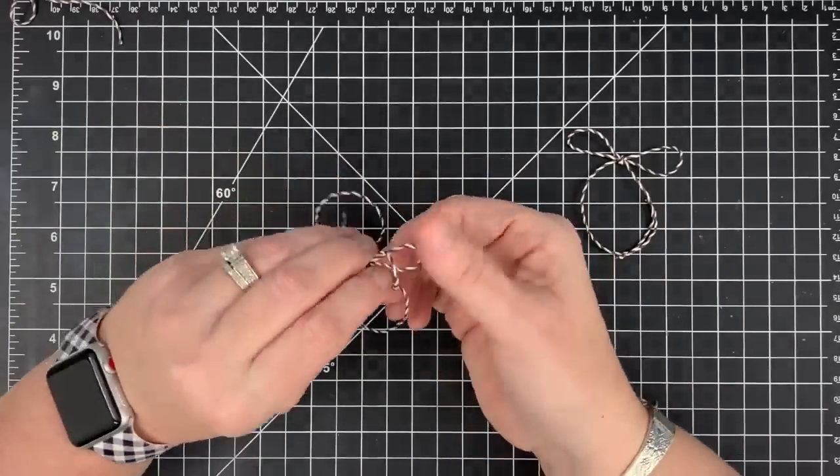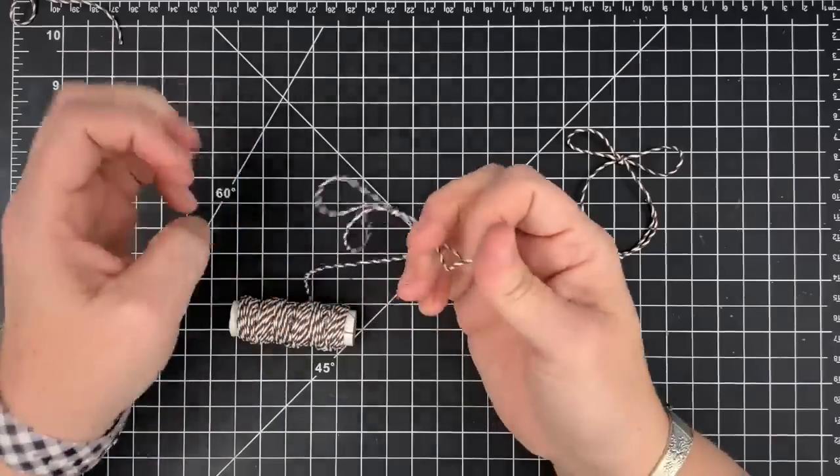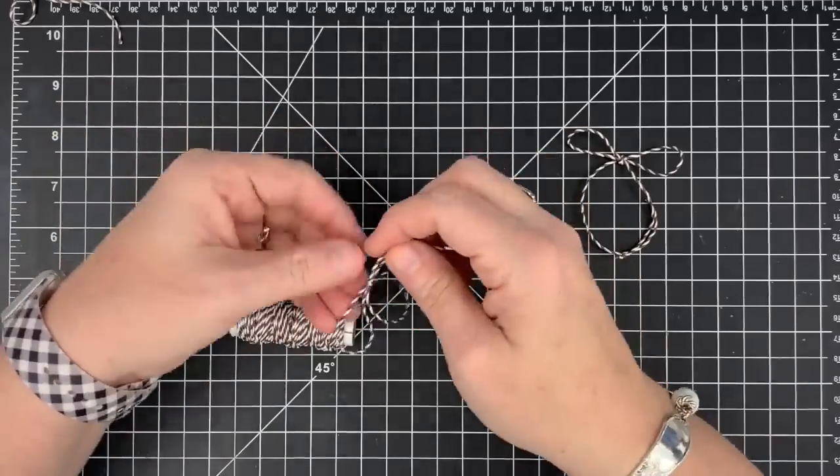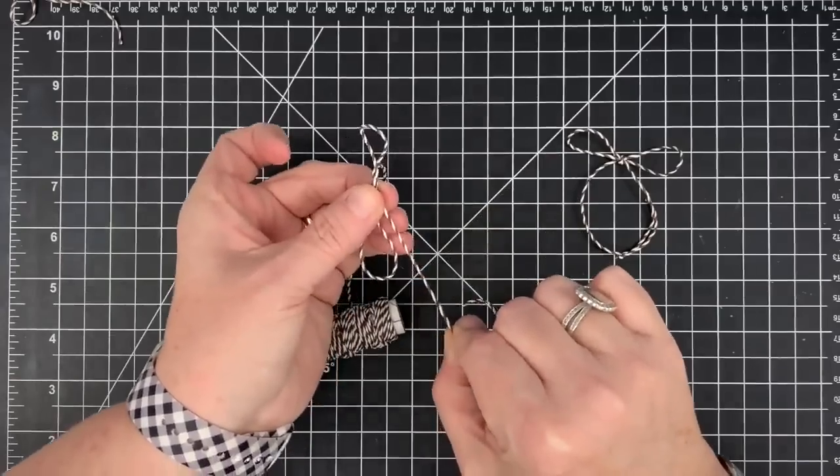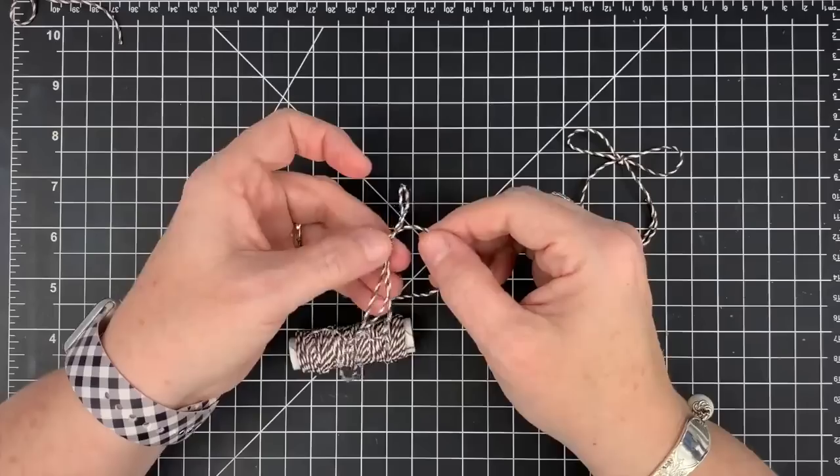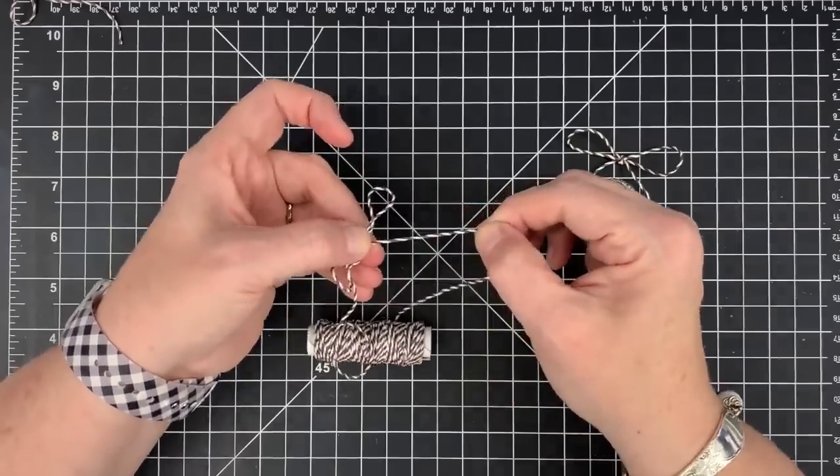Pull it super tight like you would think you'd need to, right? Pull it tight, tighten it up. But the problem is when I go to adjust these loops, I get this twistiness. There it goes. See how it's twisty, twisting? I don't want the twisty twist. I want to leave that open.